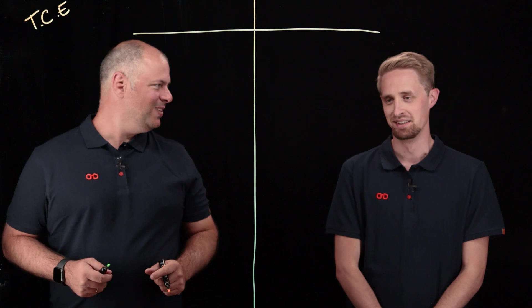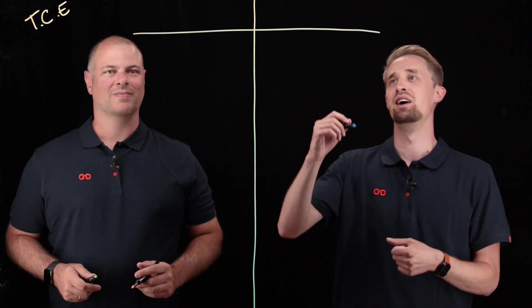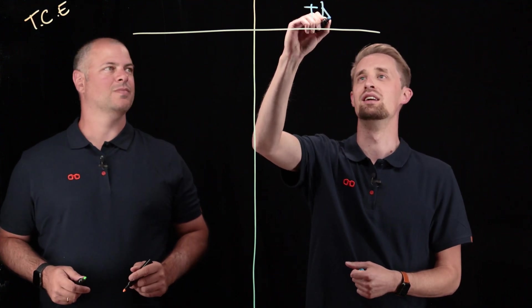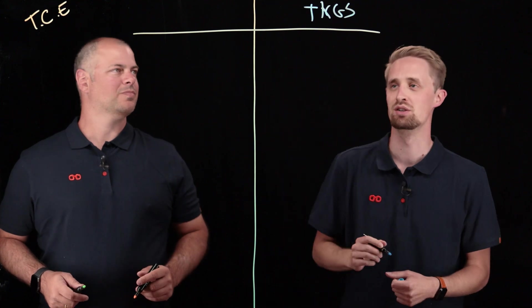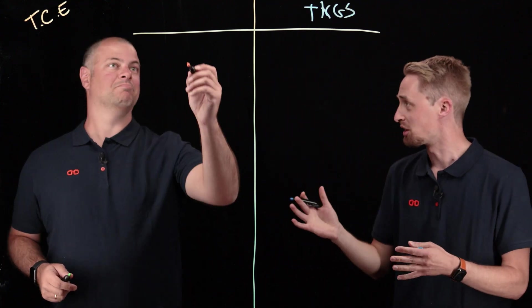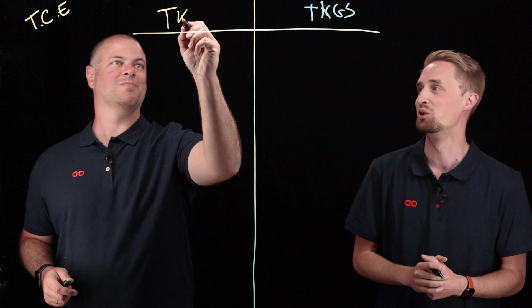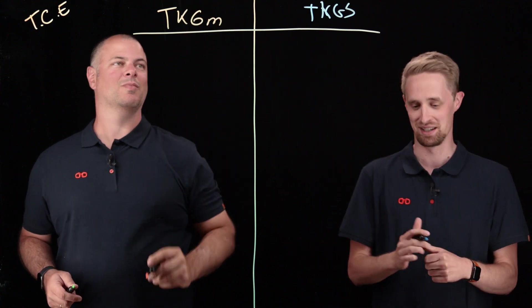So which products are they, Michel? Indeed. On the right-hand side here, we have vSphere with Tanzu, or TKGS, Tanzu Kubernetes Grid Service, and the other product is Tanzu Kubernetes Grid Multicloud, or TKGM for short. Perfect.